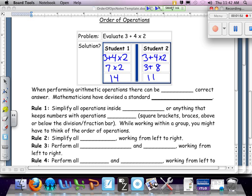So when performing arithmetic operations, there can be only one correct answer. Mathematics have devised a standard order of operations, and Student 2 kept it in mind and was able to come up with the correct answer. Student 1, thank you for showing your work, but the work was incorrect.